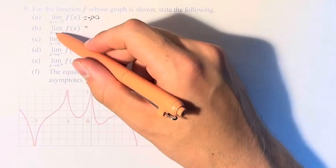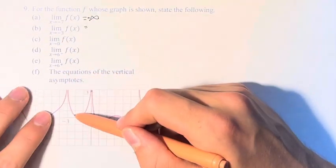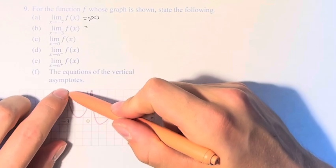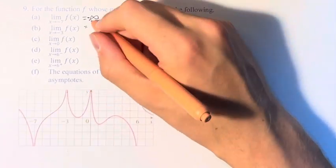As x approaches negative 3, which we can see is right here, you can see that from both sides, the value of the function goes off to positive infinity. So that's the value of the limit.